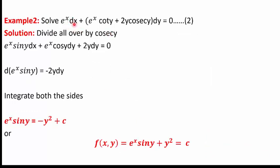In the second example, we solve eˣ dX + (eˣ cot Y + 2Y cosec Y) dY = 0. Dividing all terms by cosec Y, the equation becomes eˣ sin Y dX + eˣ cos Y dY + 2Y dY = 0. The first two terms can be written as d(eˣ sin Y). So we have d(eˣ sin Y) = −2Y dY. Integrating both sides, the solution is eˣ sin Y + Y² = C.